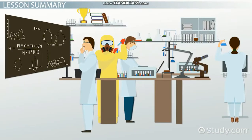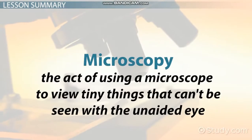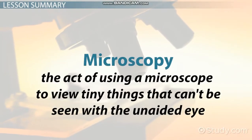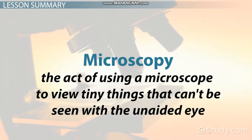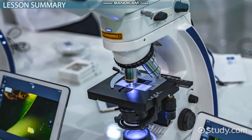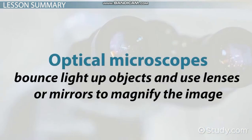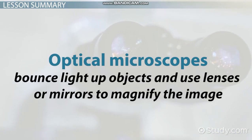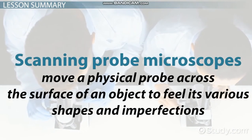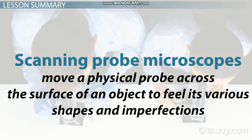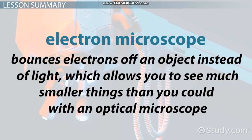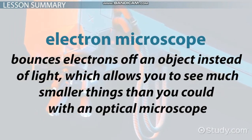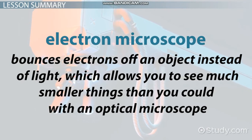Let's take a couple of moments to review what we've learned in this lesson. Microscopy is the act of using a microscope to view tiny things that can't be seen with the unaided eye. There are three main types: optical microscopy, scanning probe microscopy, and electron microscopy. Optical microscopes bounce light off objects and use lenses or mirrors to magnify the image. Scanning probe microscopes move a physical probe across the surface of an object to feel its various shapes and imperfections. An electron microscope bounces electrons off an object instead of light, which allows you to see much smaller things than you could with an optical microscope.